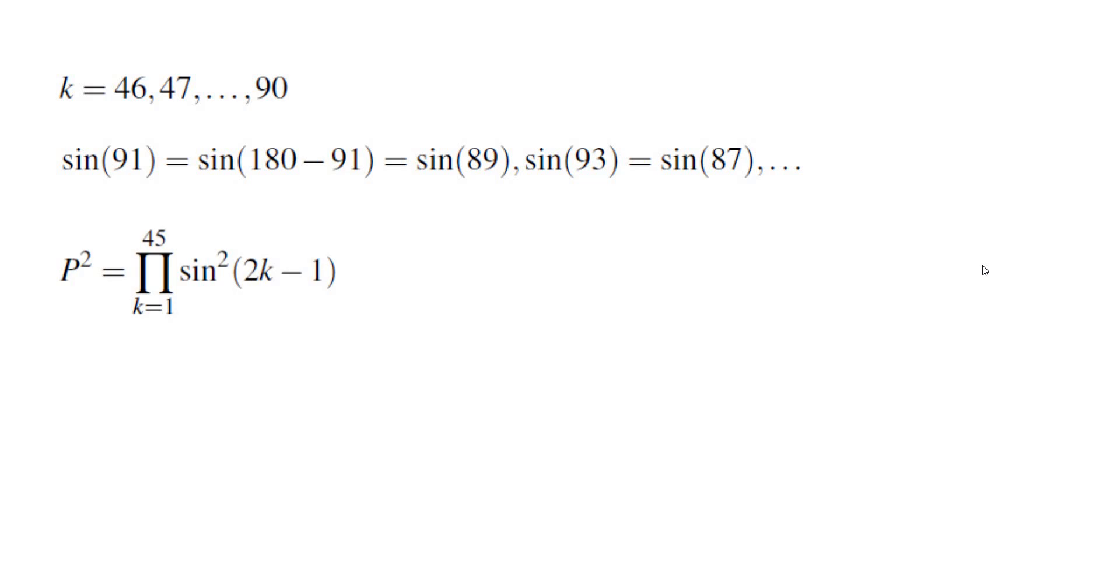In other words, if I square the initial product, which is in fact a positive number, I can rewrite it as the product of sin(2k-1) and sin(180-(2k-1)),